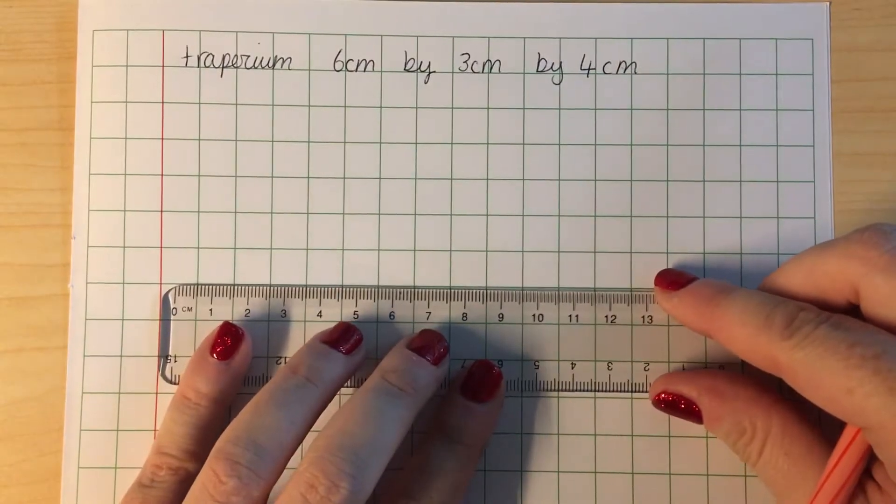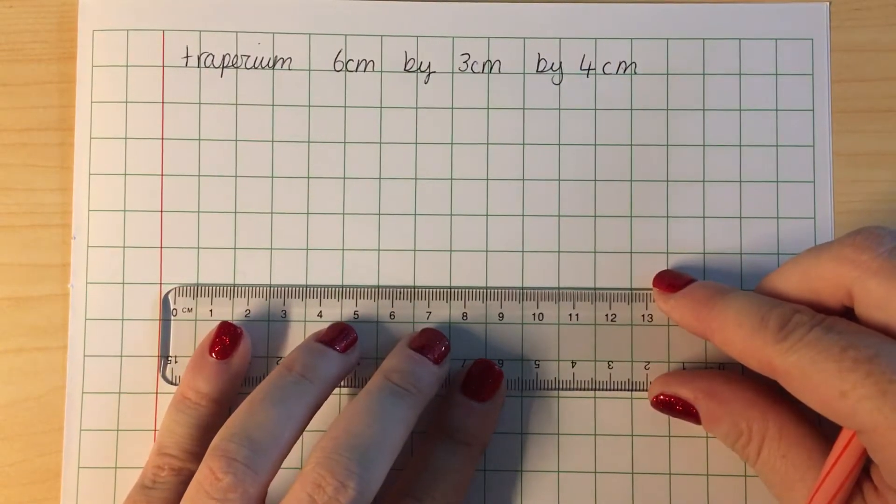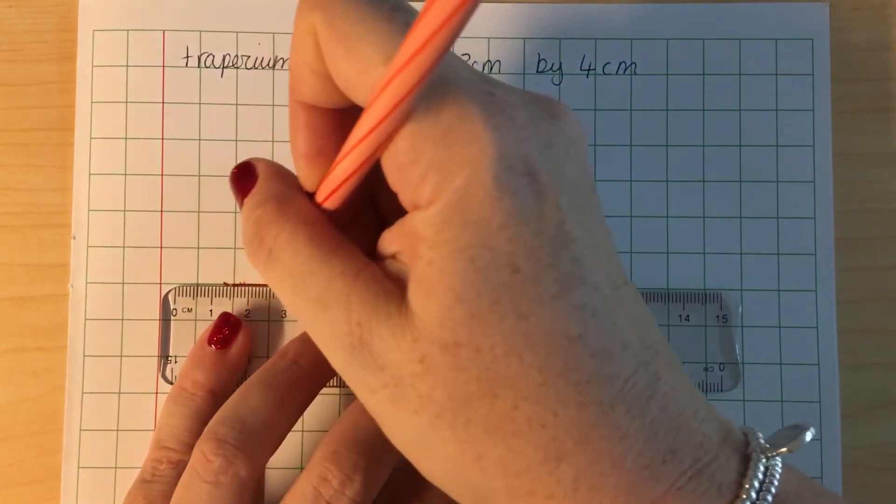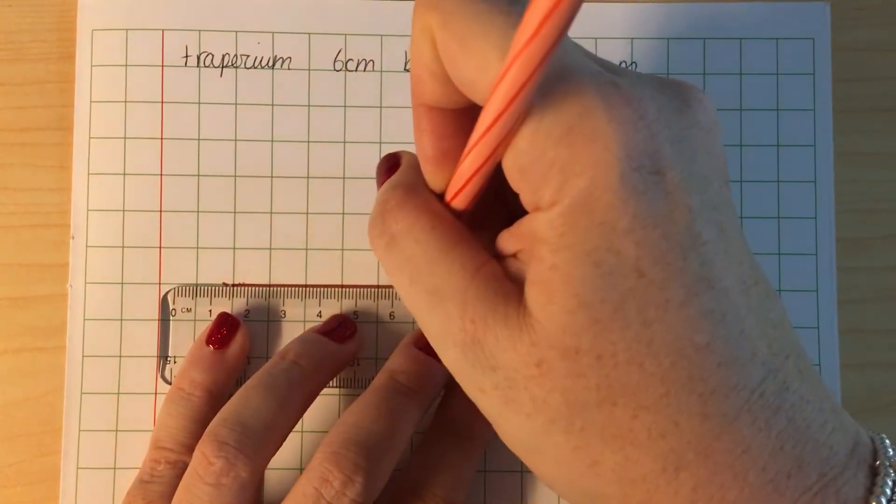So first we're going to draw the 6 cm. 1, 2, 3, 4, 5, 6.